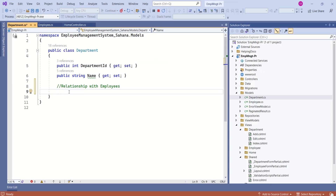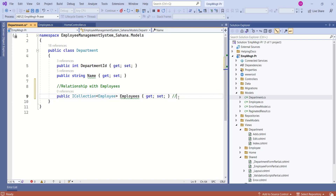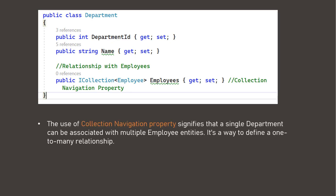To specify that a department can have many employees, we use a Collection Navigation property. This Collection Navigation property signifies that a single department can be associated with multiple employee entities. In Entity Framework Core, it's a way to define a one-to-many relationship. We are done with creating models — later, if needed, we can come back and modify them.